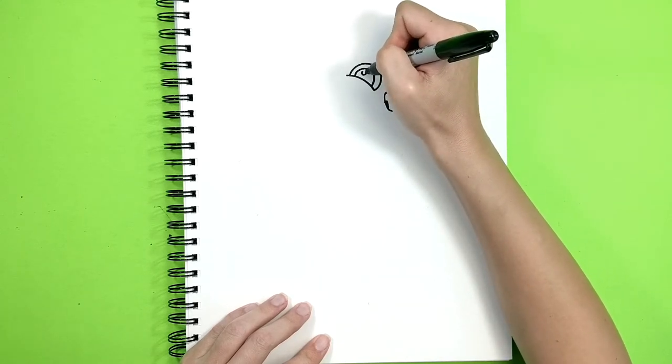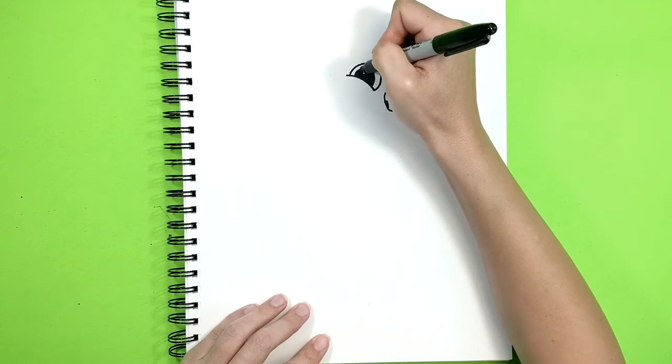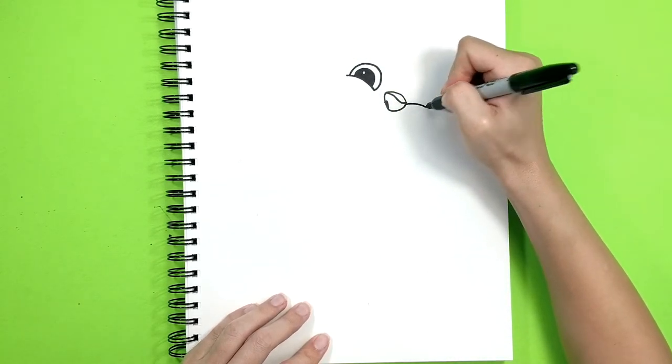And a little circle on top. Let's color this black. There we go. Now let's do his second eye.